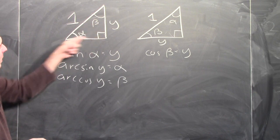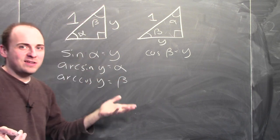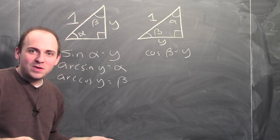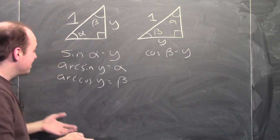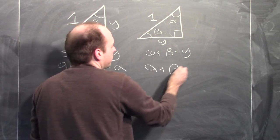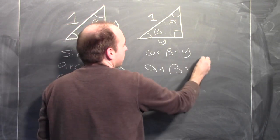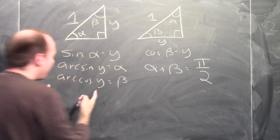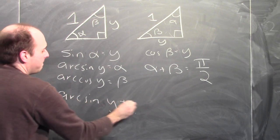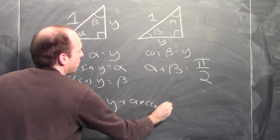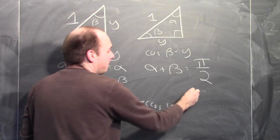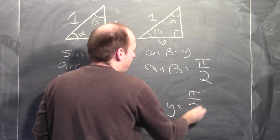This is a right triangle, and the angles add up to 180 degrees. So alpha plus beta add up to 90 degrees, or pi over 2 radians. That means alpha plus beta equals pi over 2. Consequently, arcsine y plus arc cosine y — which is alpha plus beta — add up to pi over 2.